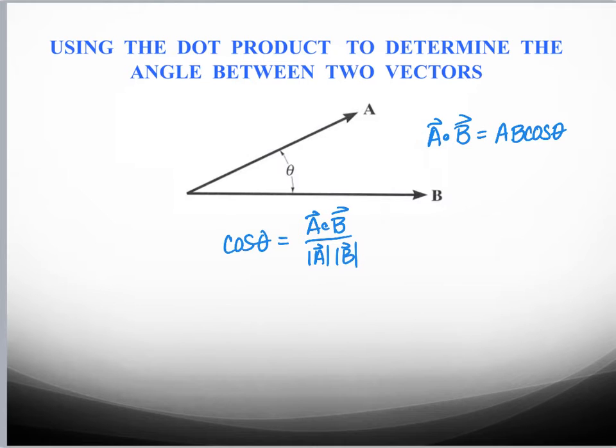We can just rearrange this. And so if we know what A dot B is, and we put that in, if we find the magnitude of the two vectors, we can then divide those two terms, take the inverse cosine, and then we can calculate the angle between the two vectors. Pretty straightforward. Again, that's something we did before, we wanted to make sure you remember.